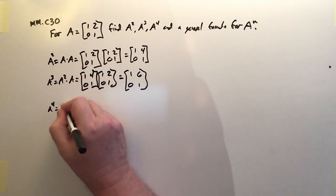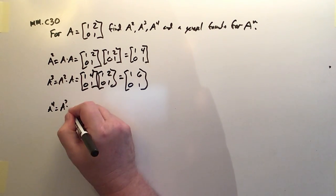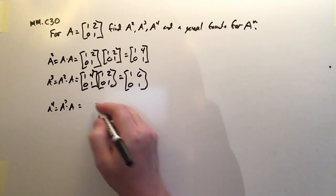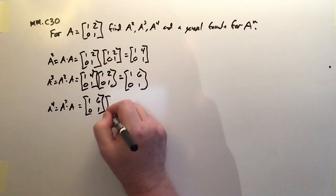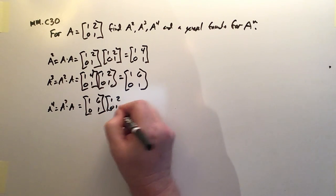So A to the fourth is going to be A cubed times another A. So let's check that. A cubed is 1, 6, 0, 1. And if I multiply that by another A, 1, 2, 0, 1.